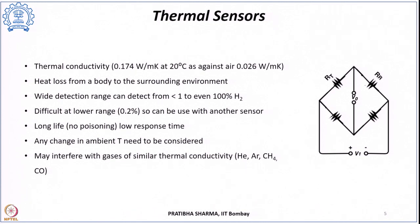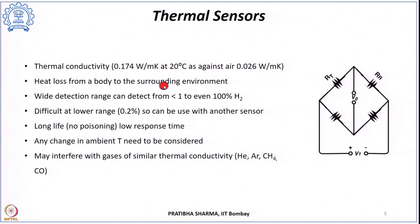The first type is the thermal sensor, which is based on thermal conductivity. The thermal conductivity of hydrogen is higher than that of air — at 20°C, hydrogen's thermal conductivity is 0.174 W/m·K while air's is 0.026 W/m·K. The principle is based on heat loss from a sensing element to the surrounding gas, and the extent of heat loss depends upon the thermal conductivity of the surrounding environment.